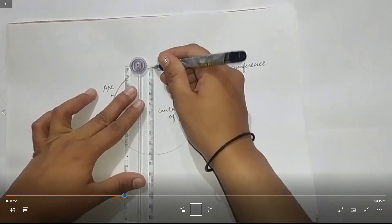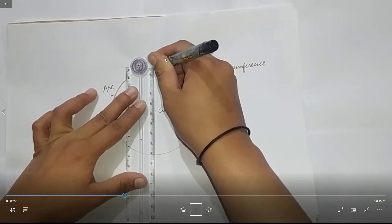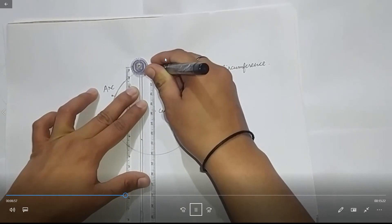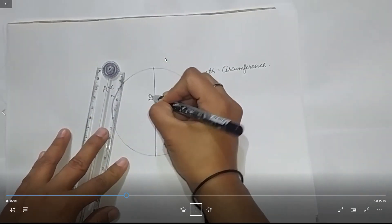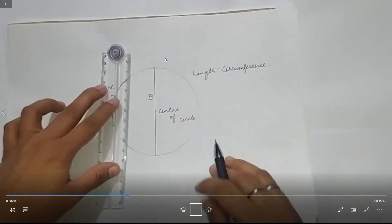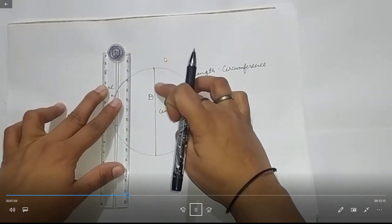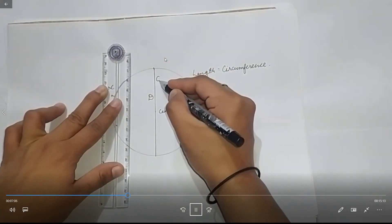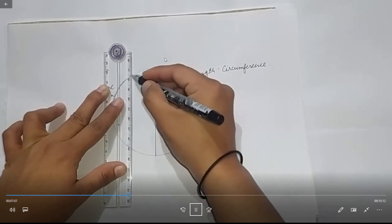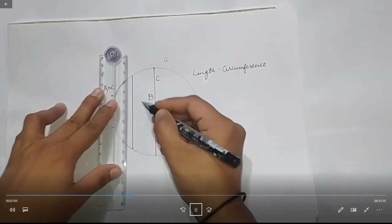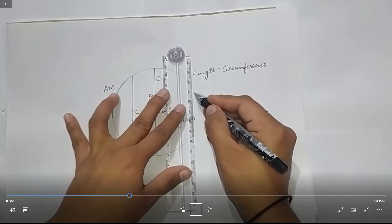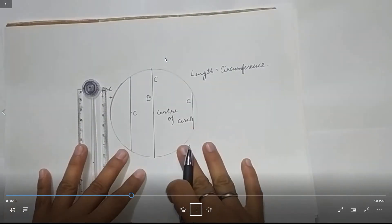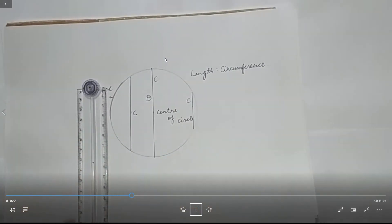जो भी line center से होके गुजरती है उसे diameter बोलते हैं. यह chord भी है, यह भी chord है. लेकिन जो chord center से होके जाता है वो diameter होता है.